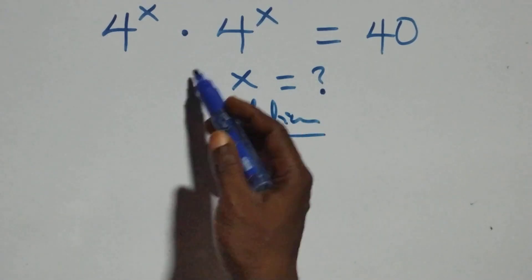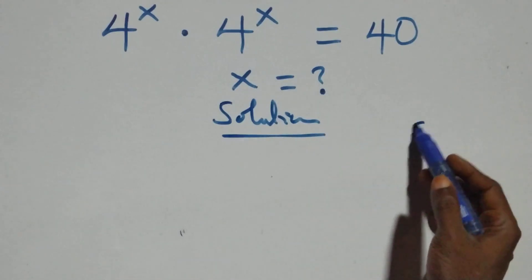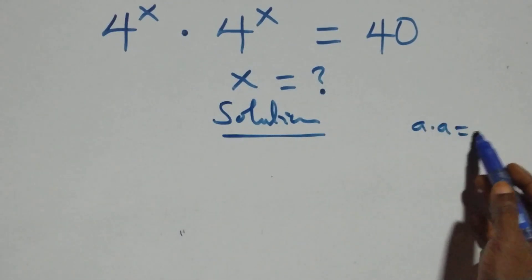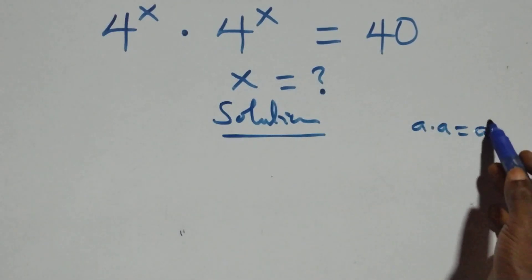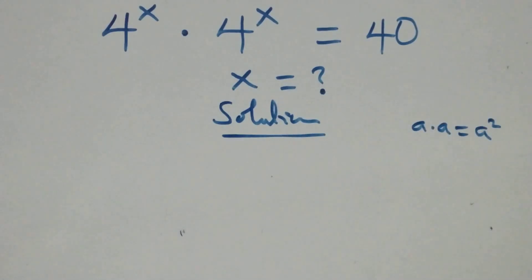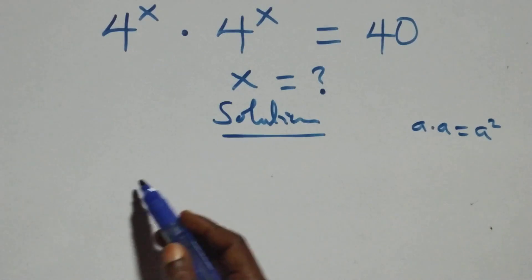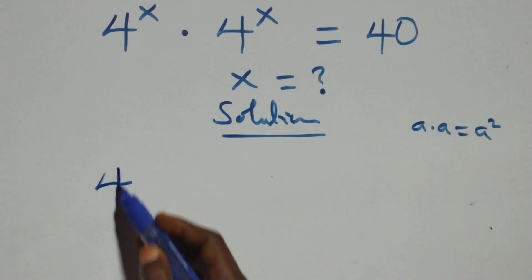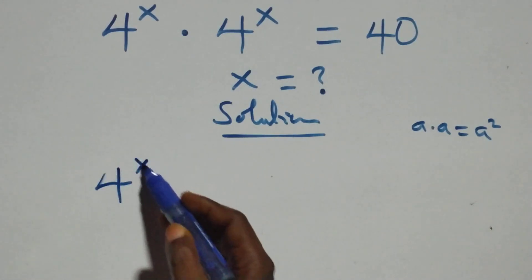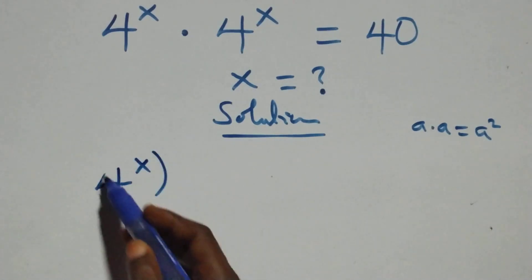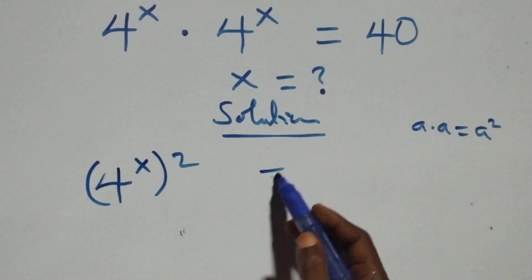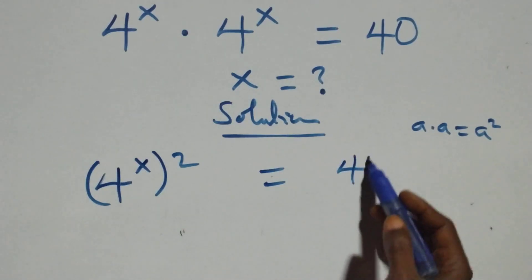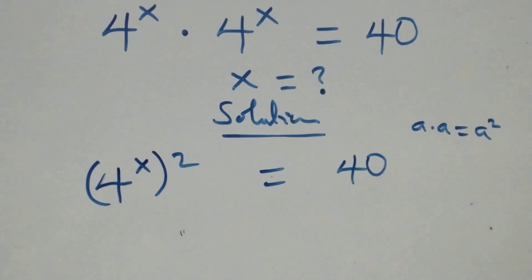What we have here: this follows when we have a times a, which is the same thing as a squared. And this here, multiplying can be written as 4 raised to power x, all squared, equals 40 on this side.